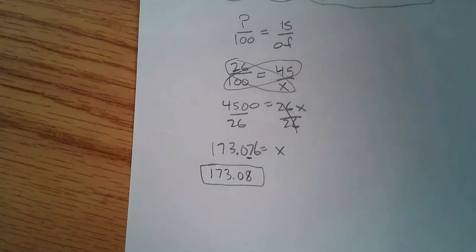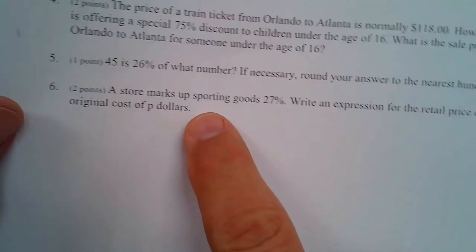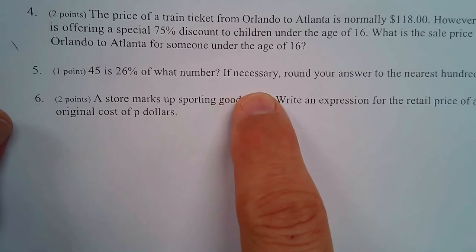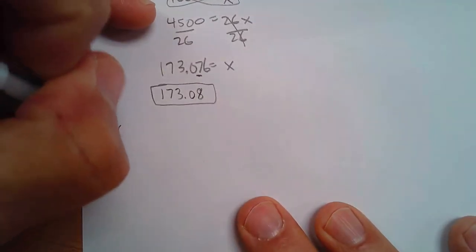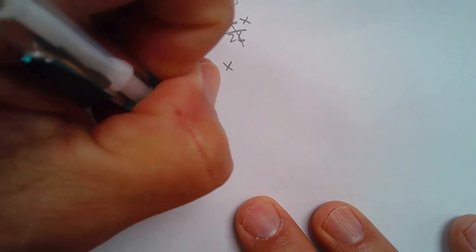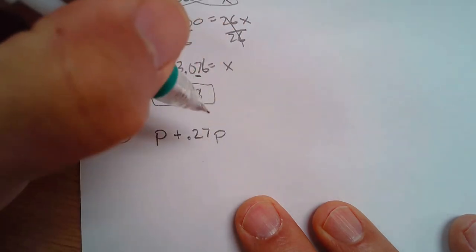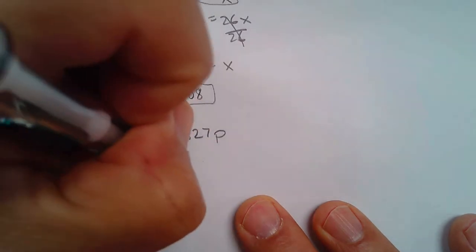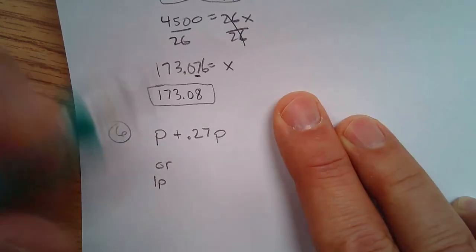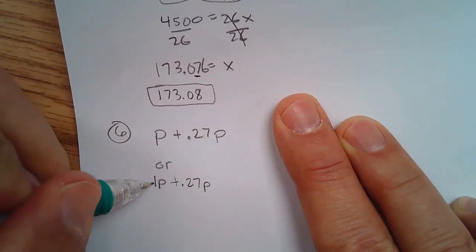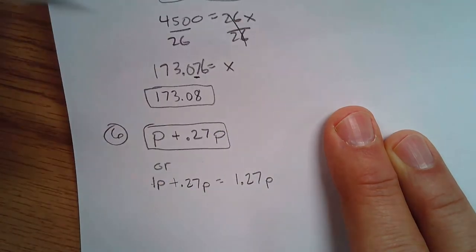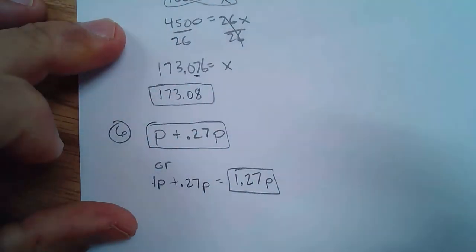Finally, number 6: a store marks up sporting goods 27%. Write an expression for the retail price of an item with an original cost of P dollars. We increase P by 27%, so it's P plus 0.27P. You can also see that P is 1P, so 1P plus 0.27P equals 1.27P. Either expression would get you full credit.